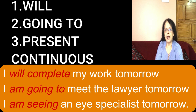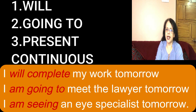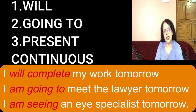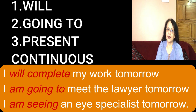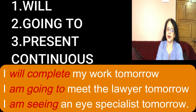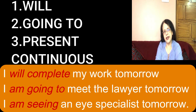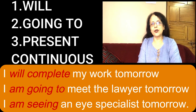Let's see the examples. I will complete my work tomorrow. I am going to meet the lawyer tomorrow. I am seeing an eye specialist tomorrow. In the first sentence, we are using will to show that the action will take place in future. In the second, we are using going to to represent future time. And in the third sentence, I am seeing — that is used to show the future reference. So in these three sentences, three different phrases are used to express the future time: will, am going to, and am seeing. But in this video, we will stick to only the use of will.